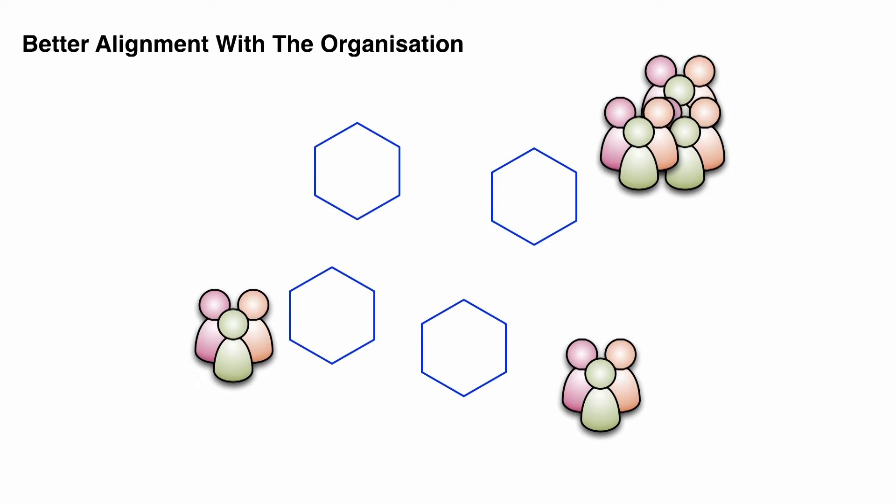Firstly, microservices allow you to align your organization to your architecture. What I mean by this is that with a large code base, if you've got, say, two or three or four teams, you're all sort of fighting over that code base. Who gets to check in now? Who's in charge of this part of the code? It can be often quite difficult to have autonomy in making your changes, because all too often you're stepping on each other's toes.